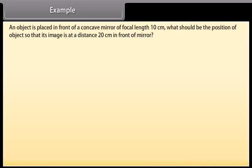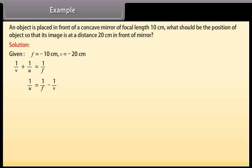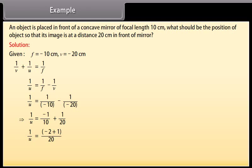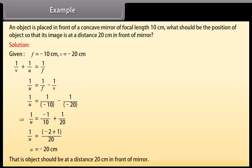Example: An object is placed in front of a concave mirror of focal length 10 cm. What should be the position of the object so that its image is at a distance of 20 cm in front of the mirror? Solution: Given f = −10 cm, v = −20 cm. Using 1/v + 1/u = 1/f: 1/u = 1/f − 1/v = 1/(−10) − 1/(−20) = −1/10 + 1/20 = (−2 + 1)/20 = −1/20. Therefore u = −20 cm. The object should be placed at a distance of 20 cm in front of the mirror.